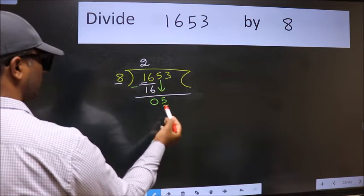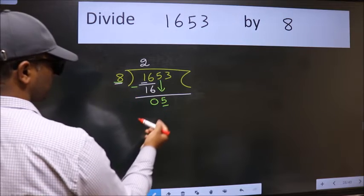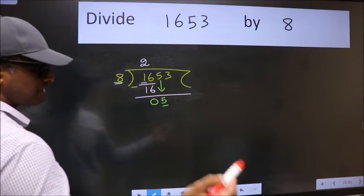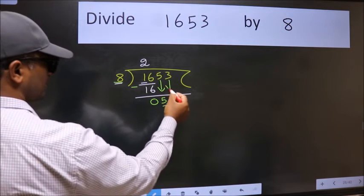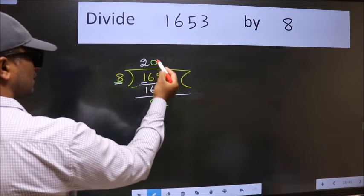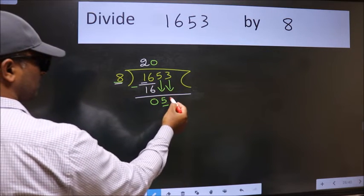Now, here we have 5 and here 8. 5 is smaller than 8, so we should bring down the next number. And the rule for bringing down the second number is to put 0 here. Then we can bring this number down.